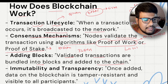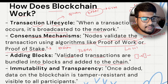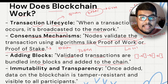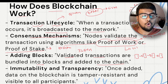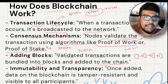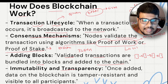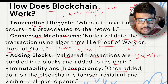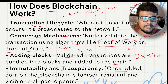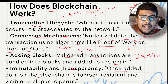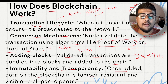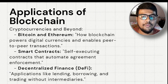Adding blocks: validated transactions are bundled into blocks and added to the chain. When a block of transactions is ready, it is broadcast and added to the network. Each network has its own timing for adding a new block. Immutability and transparency: once data is added to the blockchain, it is tamper-resistant and visible to all participants — no one can alter it.